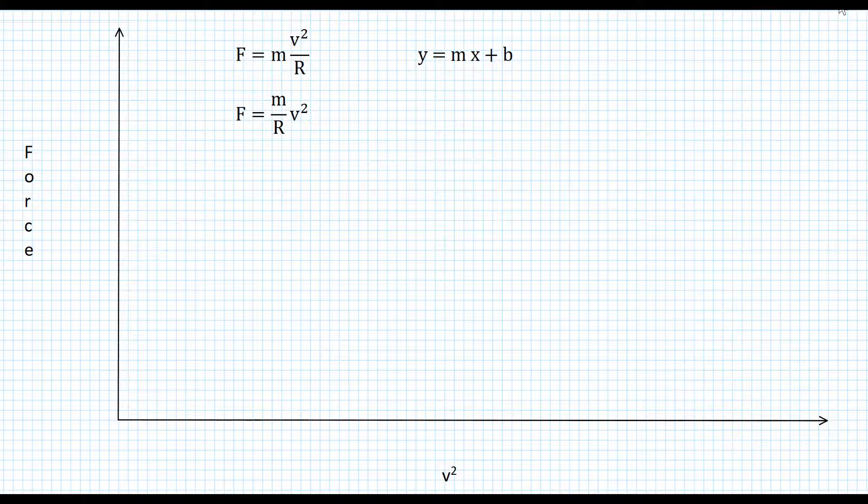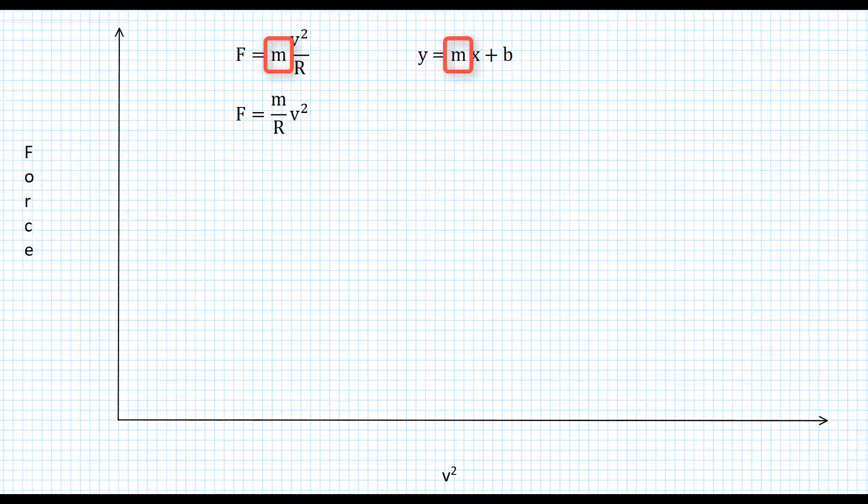I think I need to point out, both of these equations have m's in them, and that can be a little confusing because those m's are very different. For some reason we always use m in the equation for a line, y equals mx plus b, and that m stands for the slope of the line. But in our centripetal force equation, F equals mv squared over r, that m is the mass of whatever is spinning around in a circle. So try not to get confused by that. As you become familiar with working with equations, this becomes easier and easier.